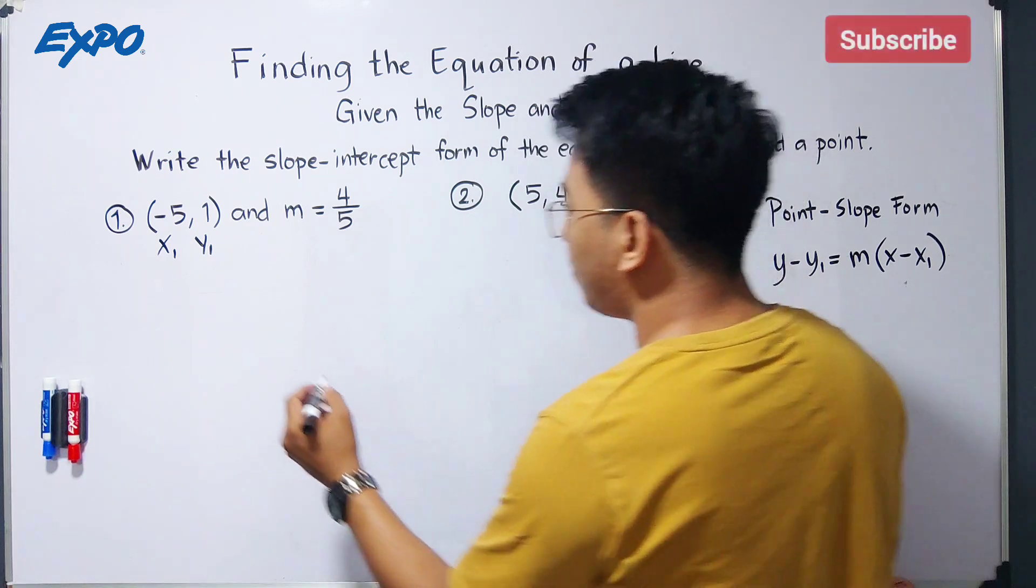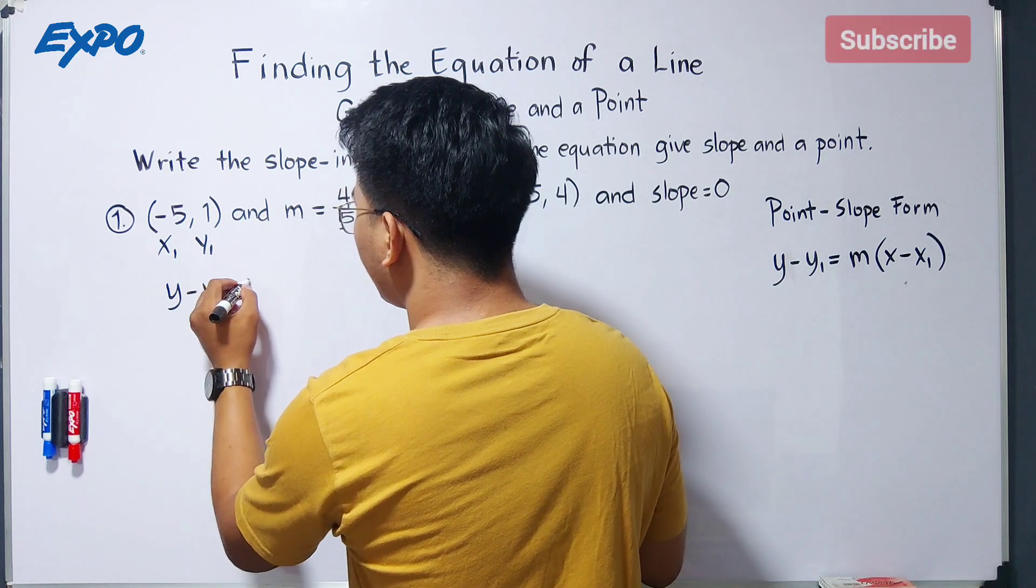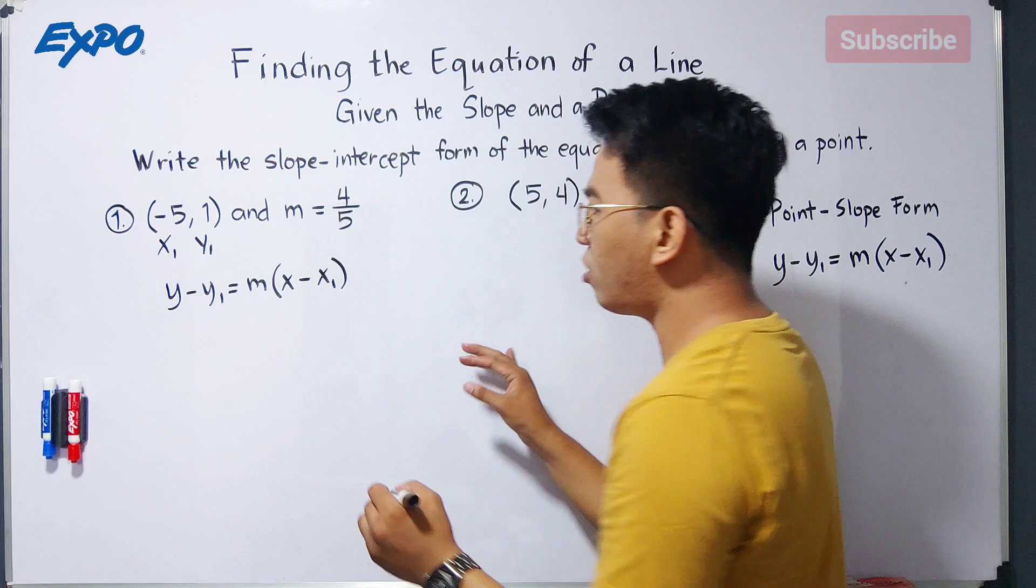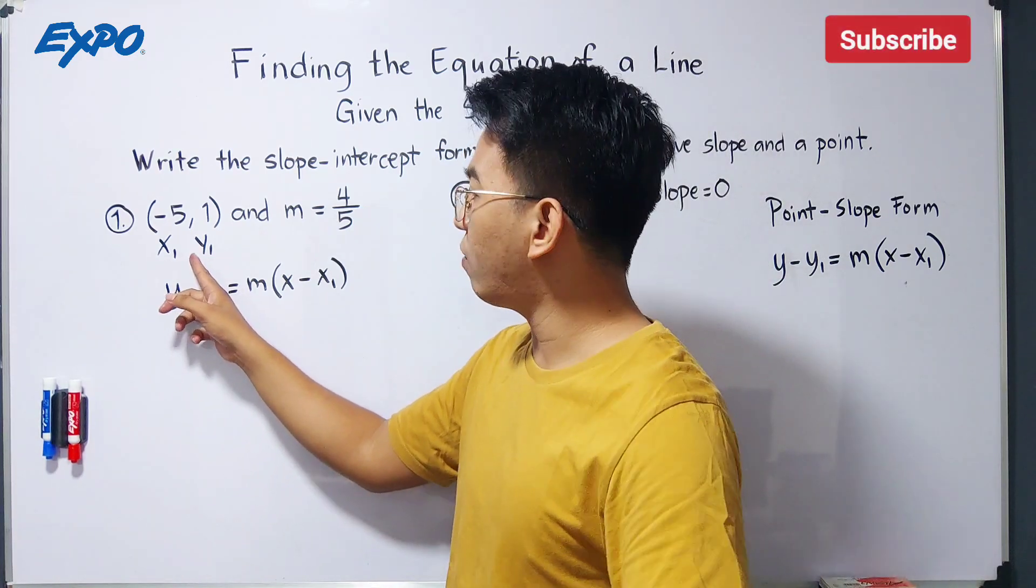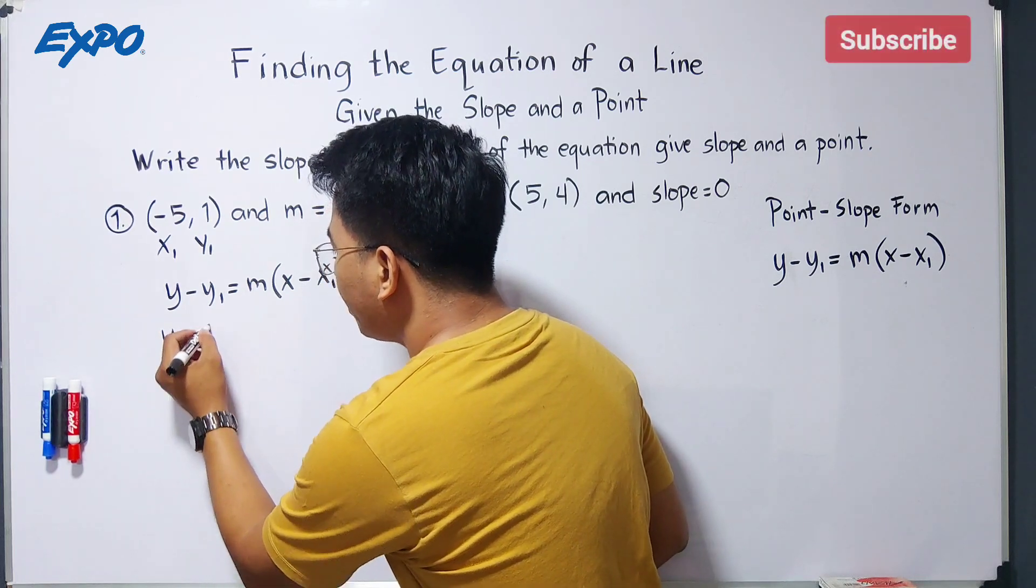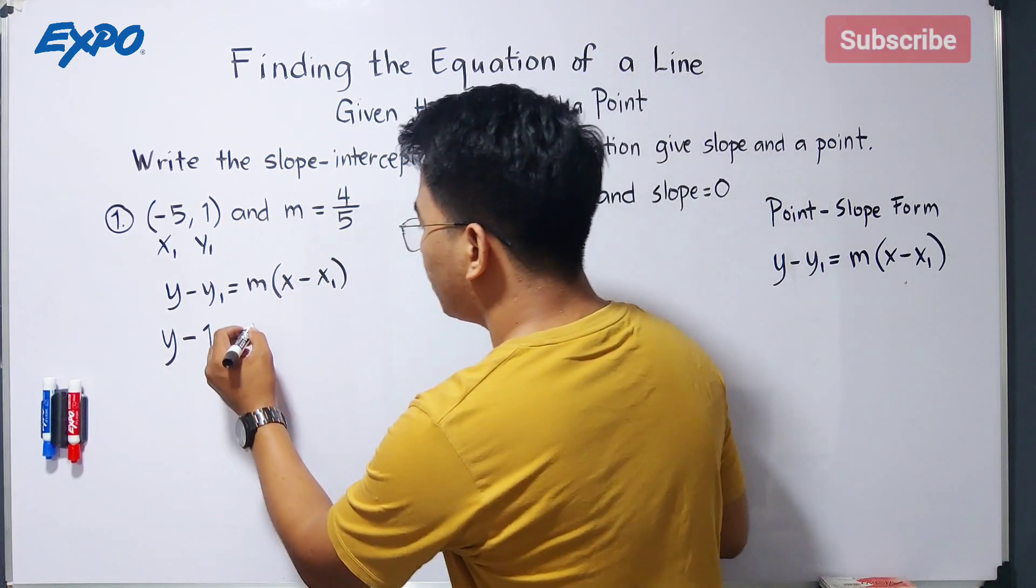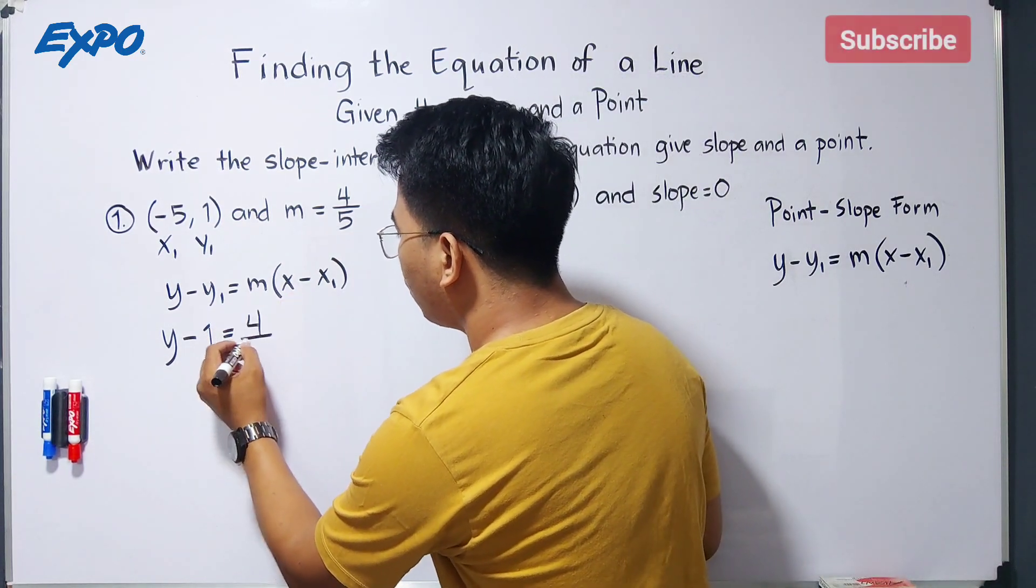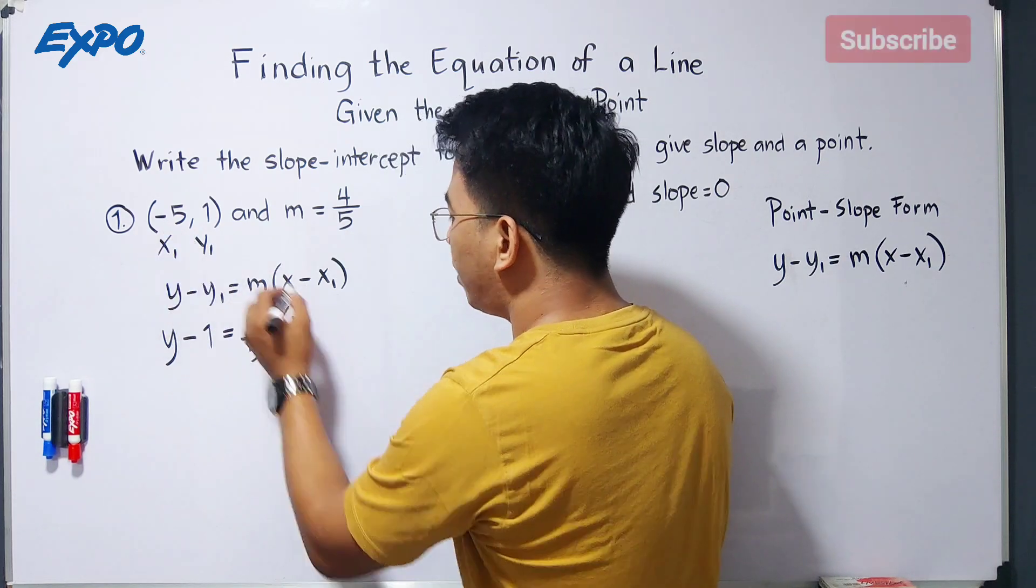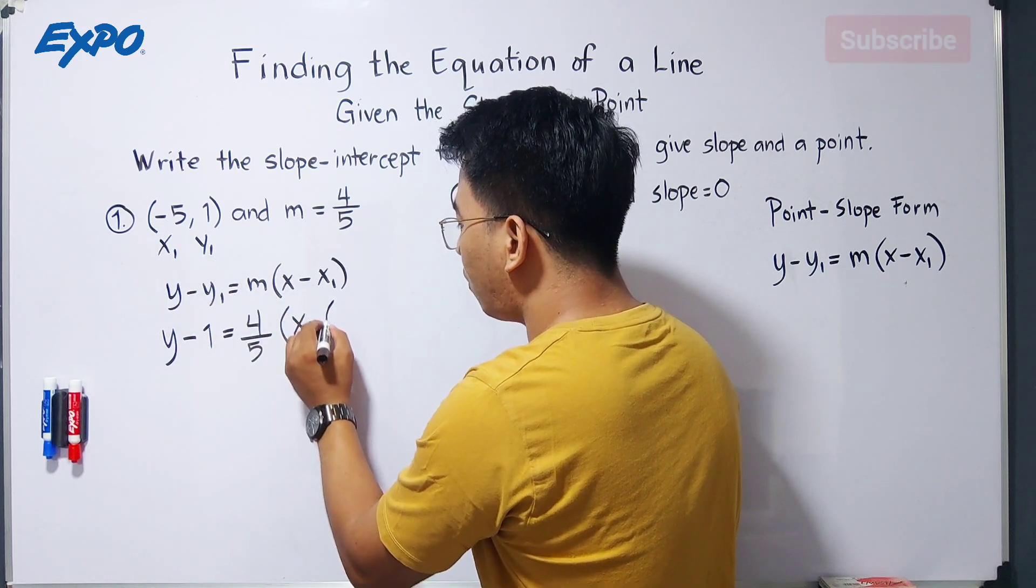So using the formula, y minus y sub 1 is equal to m times x minus x sub 1. Substitute the value of y sub 1 from this given ordered pair, which is 1. So this will become y minus 1 is equal to your slope, which is 4 over 5, that is your m. So it will become 4 over 5 times x minus your x sub 1 is negative 5. So minus and this is negative 5. We will enclose it by parenthesis.